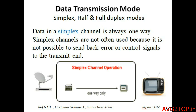Data in a simplex channel is always one way — only one-way communication can be done. And if there is any error, it's not possible to send back a request. A very good example is a dish network and a television. A dish network can send various information from the satellite to the television, but the television does not have the ability to reply back or send information back to the dish. So there is going to be one-way communication only.